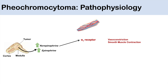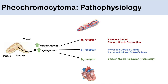Alpha-1 receptors are located throughout the body, particularly in the peripheral vascular system. Activation leads to vasoconstriction and smooth muscle contraction, causing an increase in blood pressure. Beta-1 receptors are located within the heart; their activation leads to increased cardiac output, increased heart rate, and stroke volume — so we can get tachycardia.